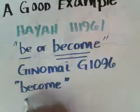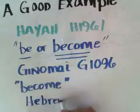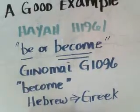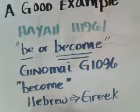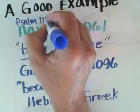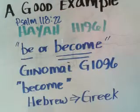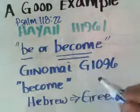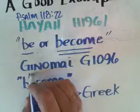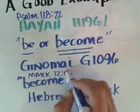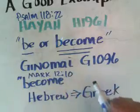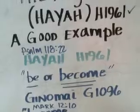Our Bibles come in two languages — primarily Hebrew and then Greek. So the question is: how did the Bible itself translate Haya? We actually have a text that tells us. There is Psalm 118:22, which uses Haya, and then there is the quotation of that text in the Koine Greek New Testament at Mark 12:10.